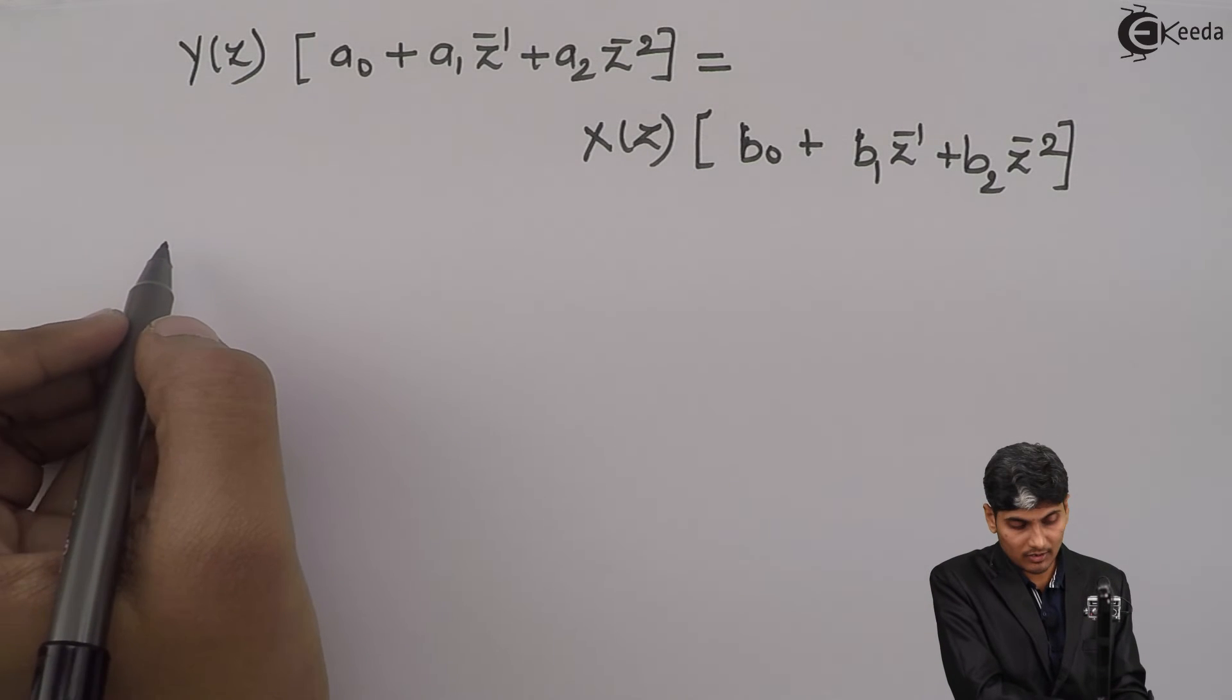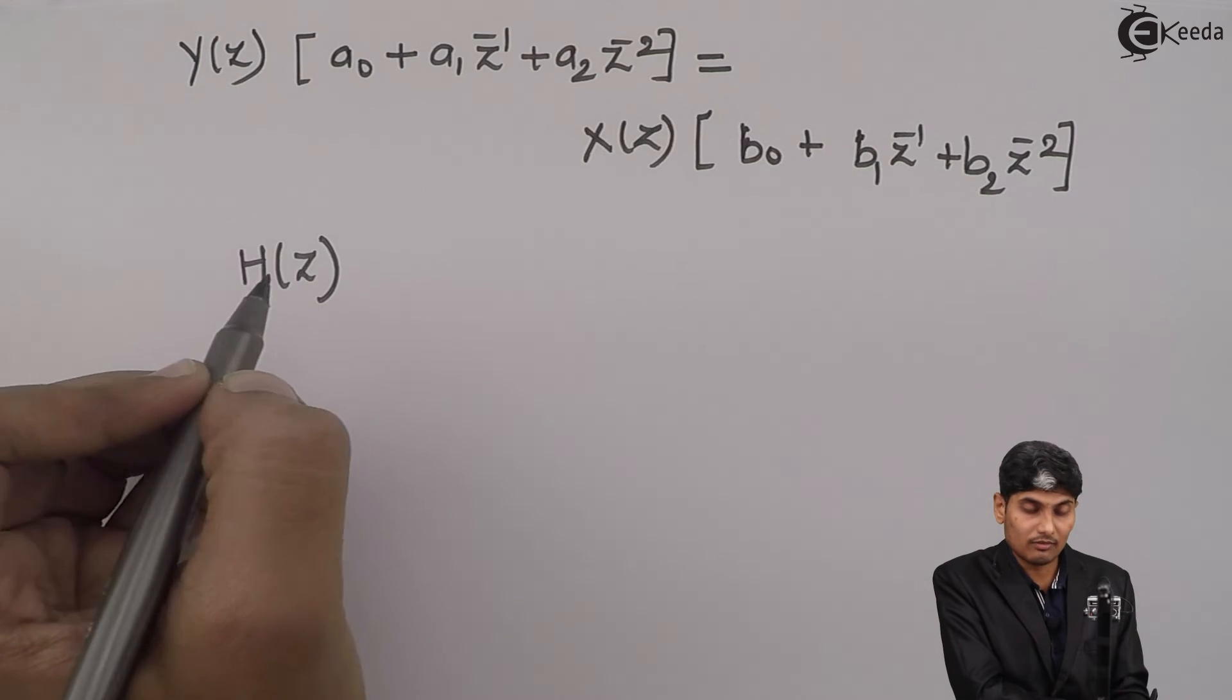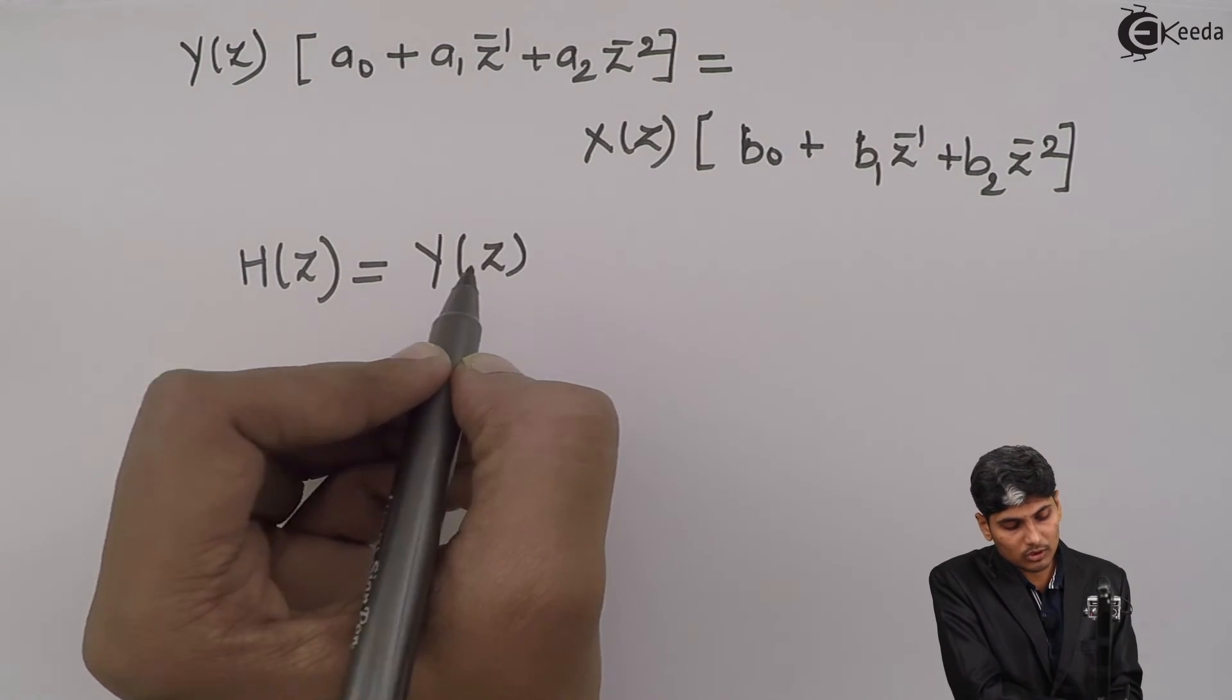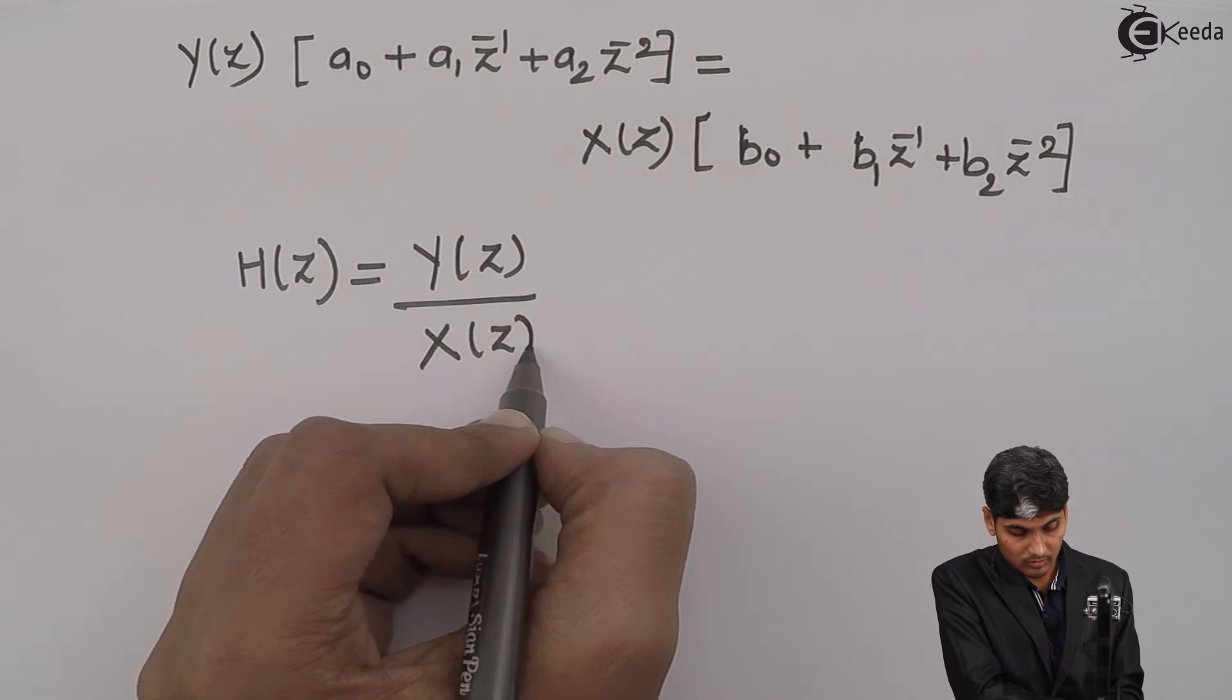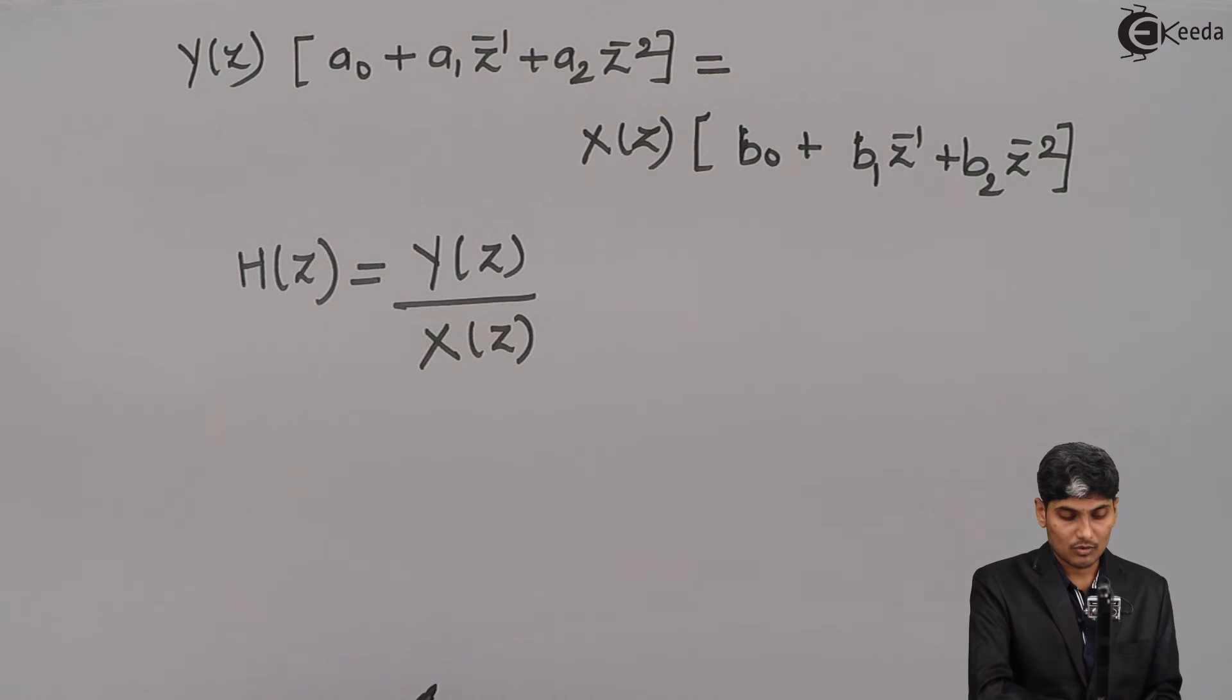So now, the definition of system transfer function is written as H(z) which is equal to output upon input. What is our output? Y(z) is our output, X(z) is our input.